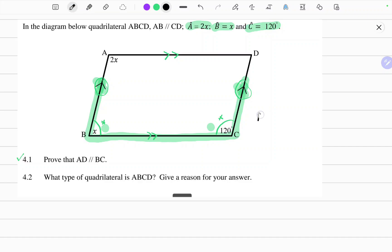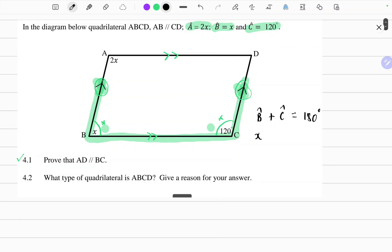So therefore, these angles are co-interior and we know their sum is equals to 180 degrees. So therefore, angle B plus angle C should be equals to 180 degrees. Angle B is given as x plus 120 degrees. It should be equals to 180 degrees.